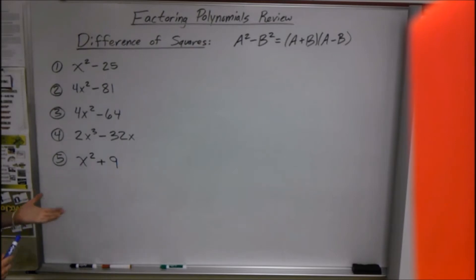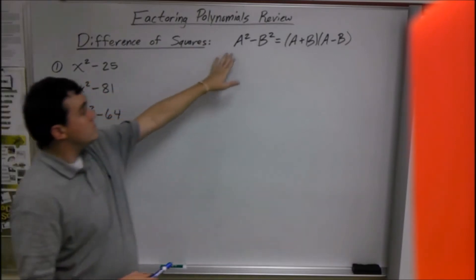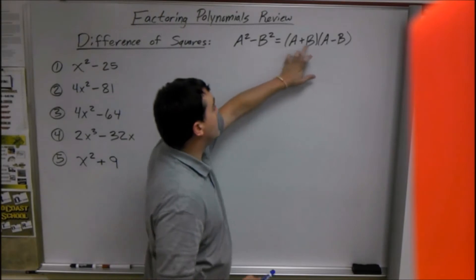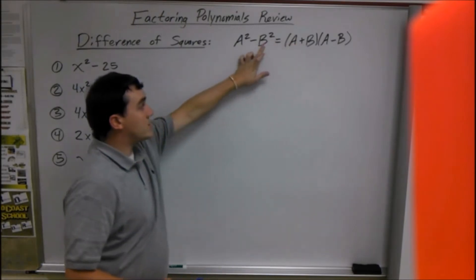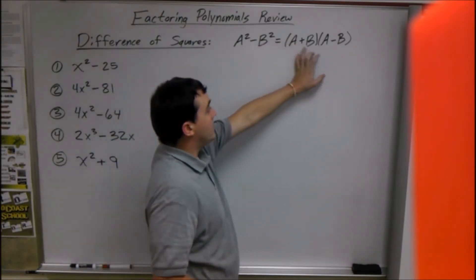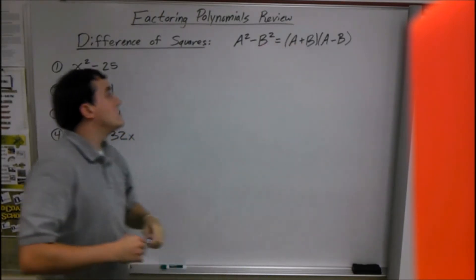Difference of squares — all you have to do is take the square root of the first term, and that's going to go first in both parentheses. Then the square root of the second term goes last in both, and one's plus, one's minus.